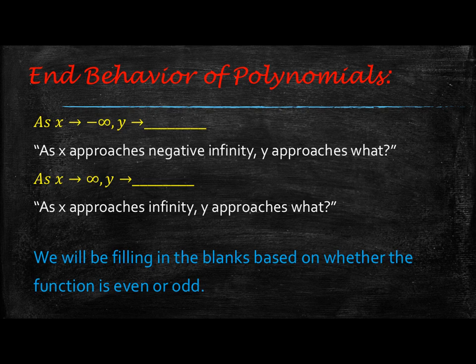When we talk about the end behavior of polynomials, we're talking about what is happening at the end of each of the graphs. What's written in yellow here is really how you're going to write it. We don't just say 'on the left side it's moving up, on the right side it's going down.' We want to put it into math terminology.